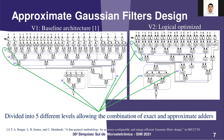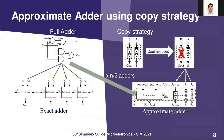The main differences from Borges' work are the logical optimization and the approximate technique employed. We approximate the full adders using the COPE strategy — this technique directly connects input A to output S and input B to carry out. In our approach, we removed the carry propagation because it's not used. We approximated different numbers of lower significant bits on the adders to determine the best trade-off between the number of bits approximated and output results.